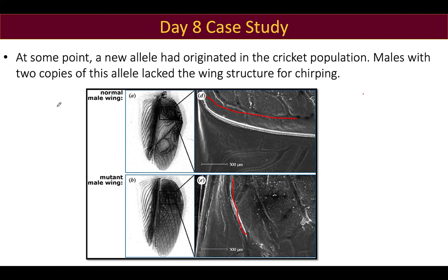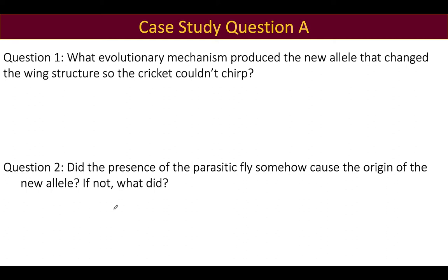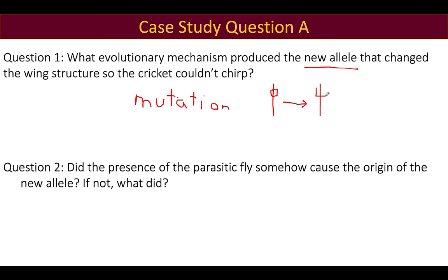So the flies would come along, a chirping male would be an easy target, and a non-chirping male just didn't get noticed and survived. The key question: what evolutionary mechanism produced the new allele that changed the wing structure? Of all the mechanisms of evolution, the only one that generates new alleles is mutation. A mutation happened at some point long before the cricket ever saw the fly — so this mutation was random, but it generated diversity in the population, producing crickets that could not chirp.